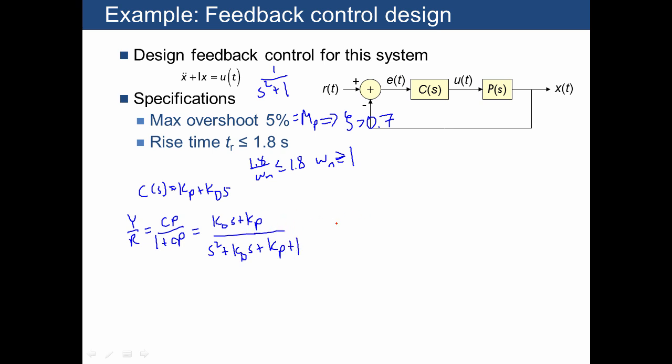It's going to give us s squared plus kd s plus kp plus 1. We already showed this previously. And now we know that we want omega n is at least 1 and zeta is at least 0.7. So that means that we have omega n squared equals 1 equals kp plus 1. So it turns out that we don't even need a kp term for this particular system.